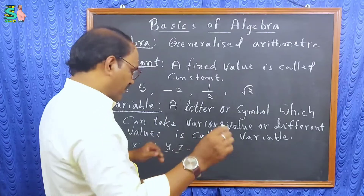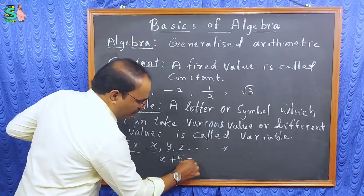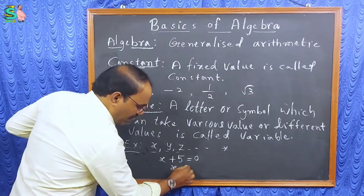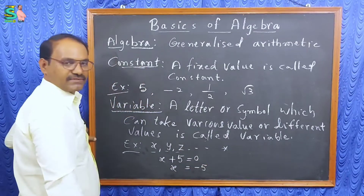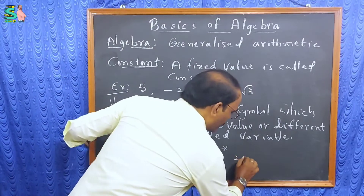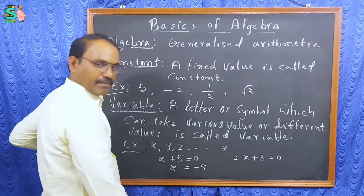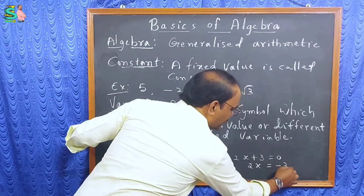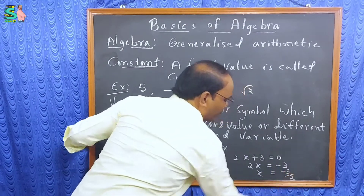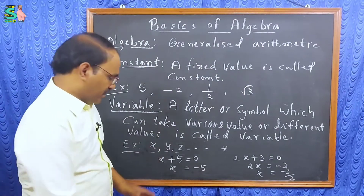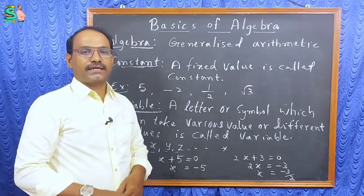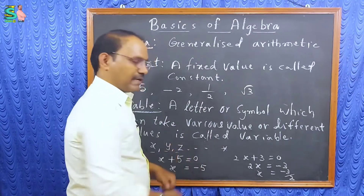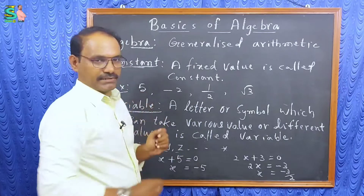Variables can take different values. For example, x plus five equal to zero — by transposition, x becomes minus five. Another question: two x plus three is equal to zero, so two x equals minus three, meaning x equals minus three by two. According to the question, the value of x is different each time — different values will come. So these types of letters or symbols are called variables.